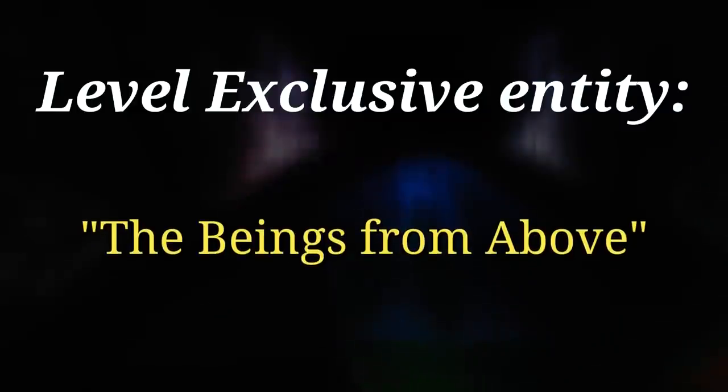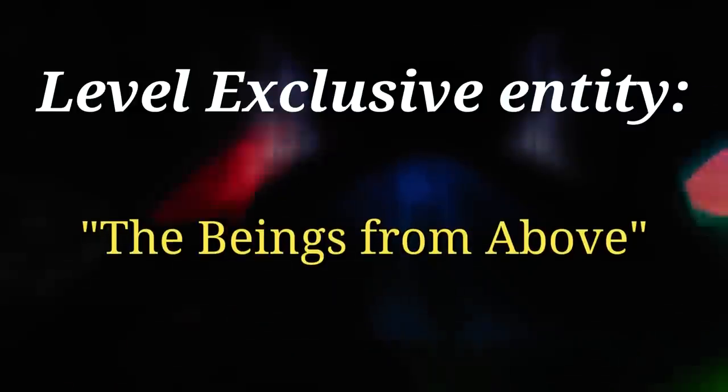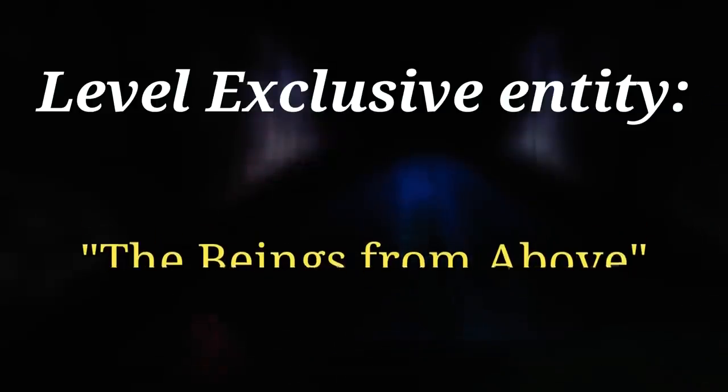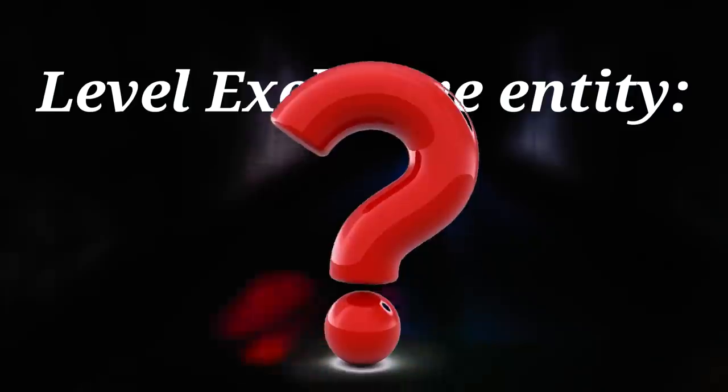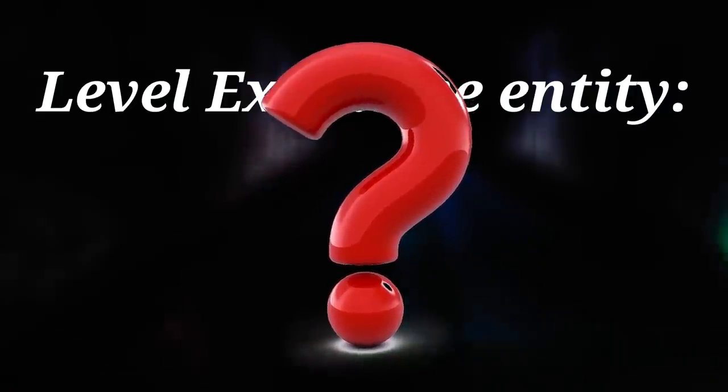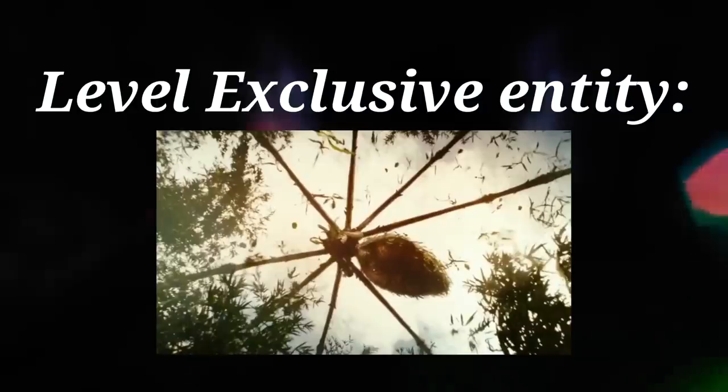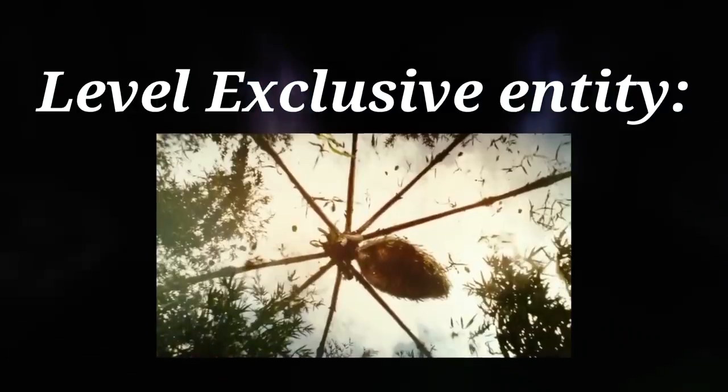Now this level also has a level exclusive entity called the Beings from Above. These are very mysterious and dangerous and they're pretty much one of the main reasons, if not the main reason, that you should not get out of your car. Their exact body description isn't known, but their legs or arms look like spider legs or crab legs. You can't see them from the ground, obviously because you'll be in a car.